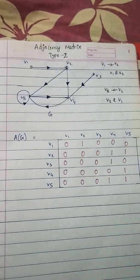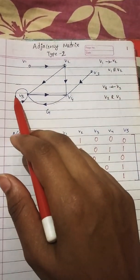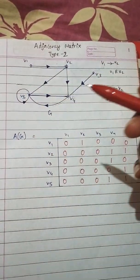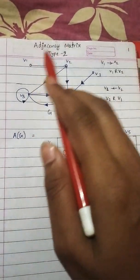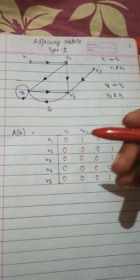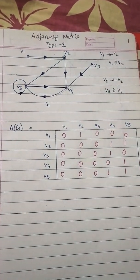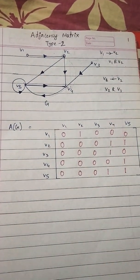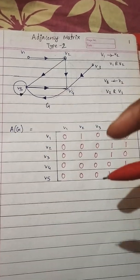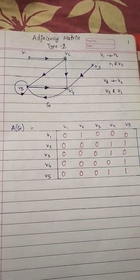Keep in mind these two points and the circular one. Also refer to the previous video for adjacency matrix representation type 1. This is a very easy method — you just express the given graph in terms of an adjacency matrix. Thank you.